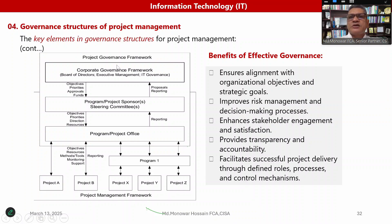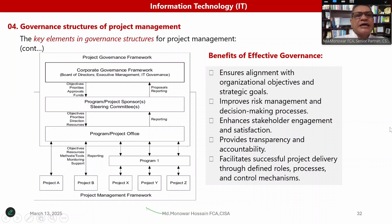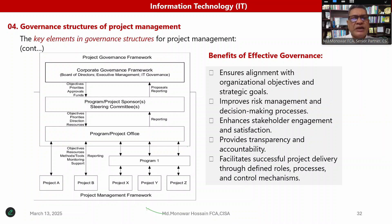The project governance framework ensures alignment with organizational objectives and strategic goals. Its benefits include: alignment with organizational objectives and strategic goals, improved risk management and decision-making, enhanced stakeholder engagement and satisfaction, and transparency and accountability that facilitate successful project delivery through defined roles, processes, and control mechanisms. Challenges include ambiguity in roles and responsibilities that can lead to conflict or inefficiencies, resistance to change during governance implementation, and balancing flexibility with control to ensure project success without stifling innovation.